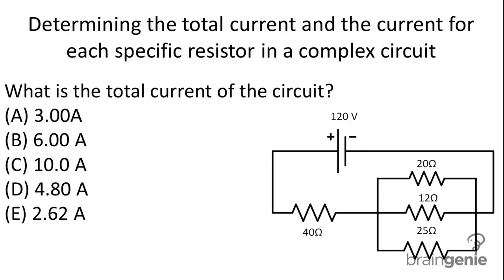Determining the total current and the current for each specific resistor in a complex circuit. What is the total current of the circuit?